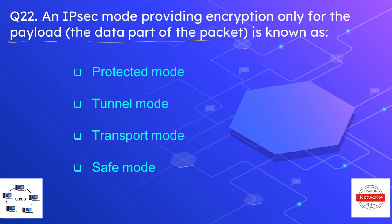Question number twenty-two is: the IPsec mode providing encryption only for the payload or data portion of the packet is known as? The options are protected mode, tunnel mode, transparent mode, and safe mode. The correct option is transparent mode. In tunnel mode the whole packet including data and IP address is encrypted, while in transparent mode only the payload or data part is encrypted and the IP address remains visible.